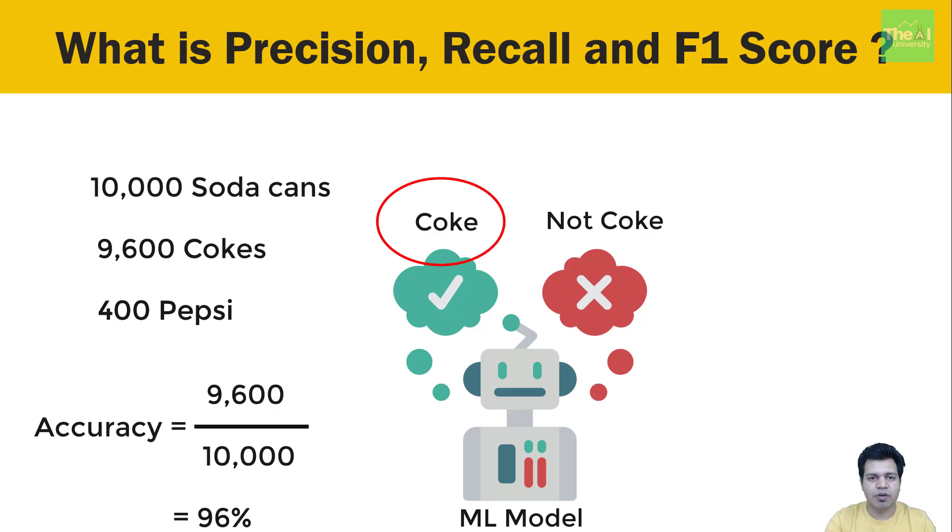So basically a classifier which doesn't work properly is giving an accuracy of 96%. So in order to overcome this disadvantage of the metric called accuracy, we try to make use of other performance measures of evaluation.